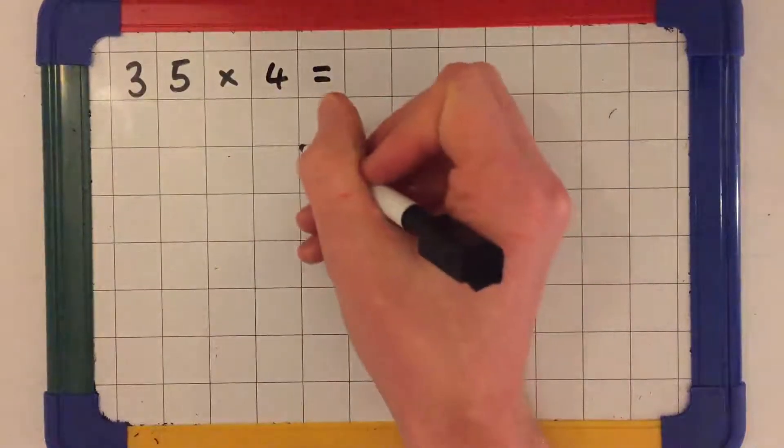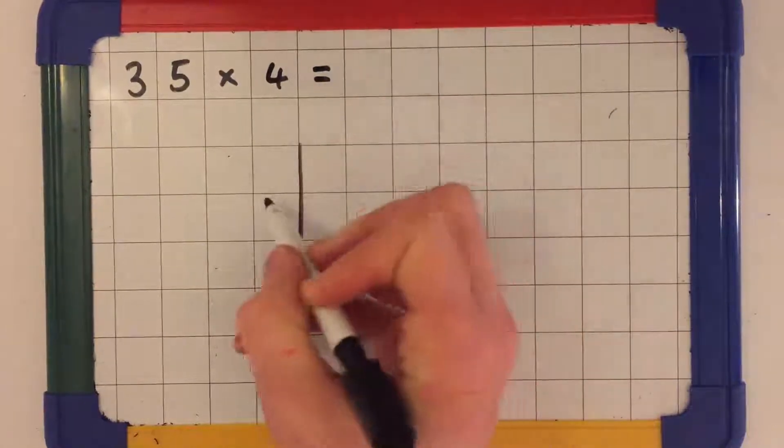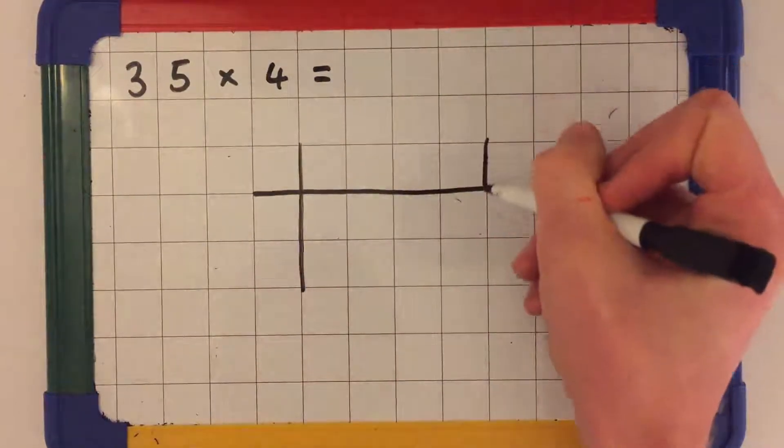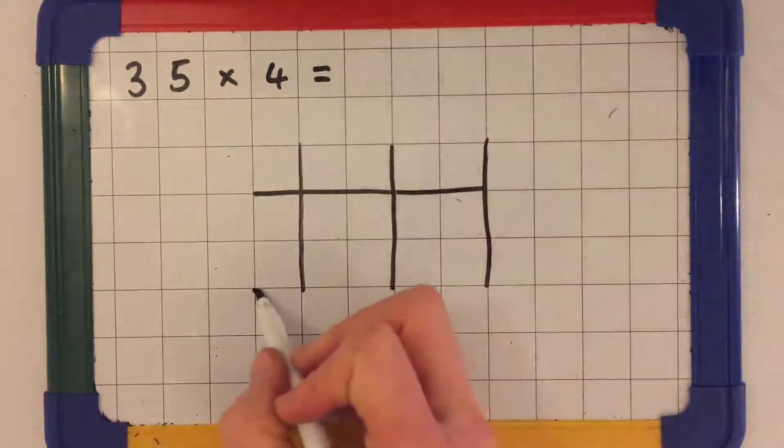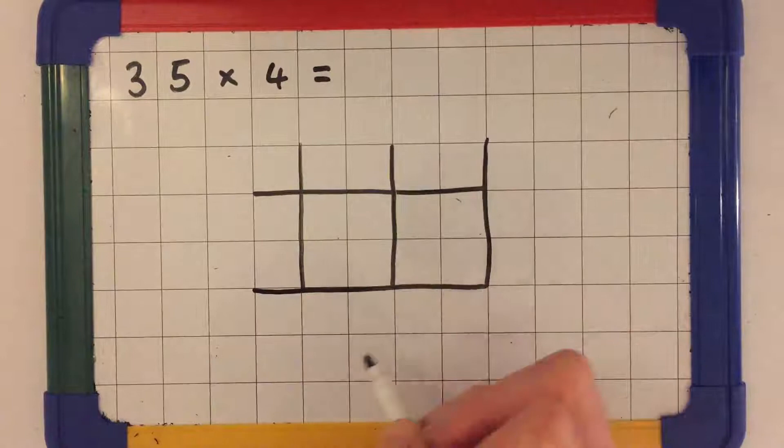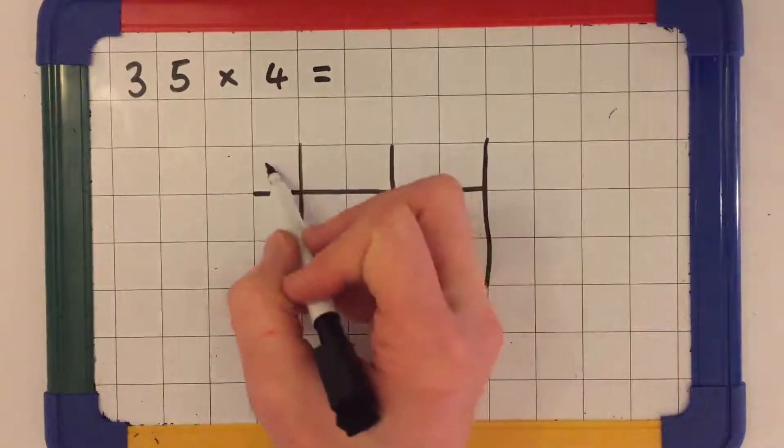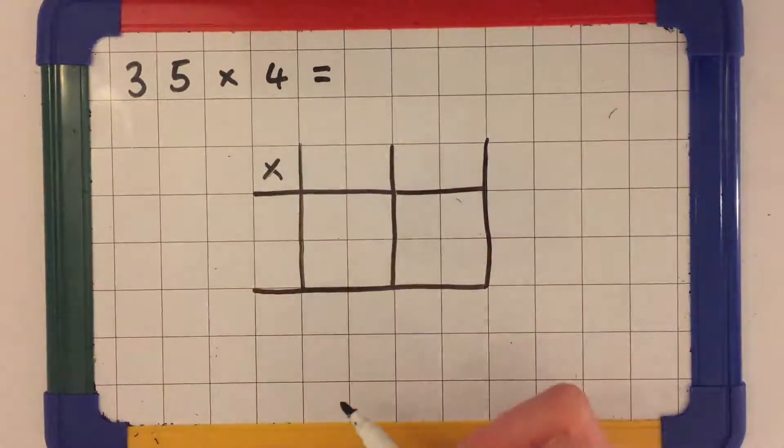The first thing we need to do is draw out our grid. I put a multiplication sign up in this corner.